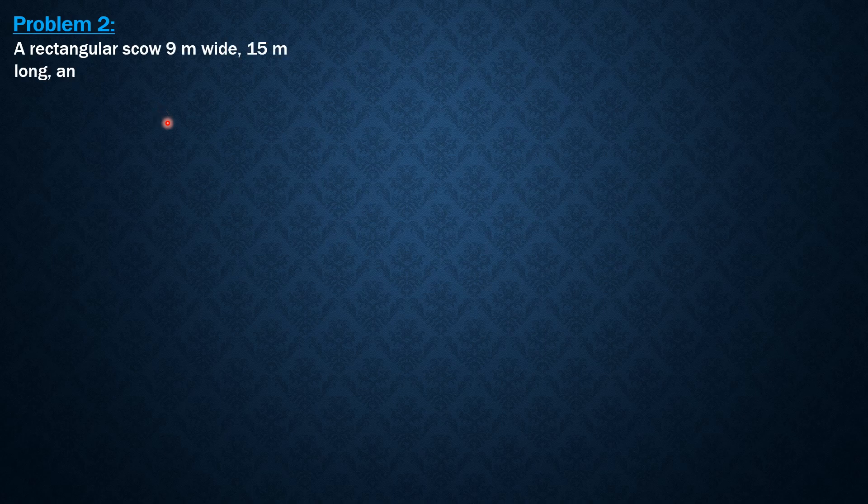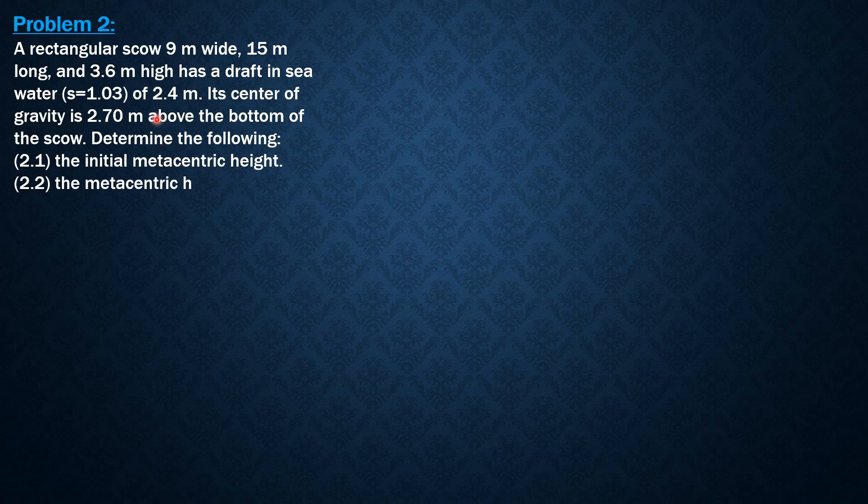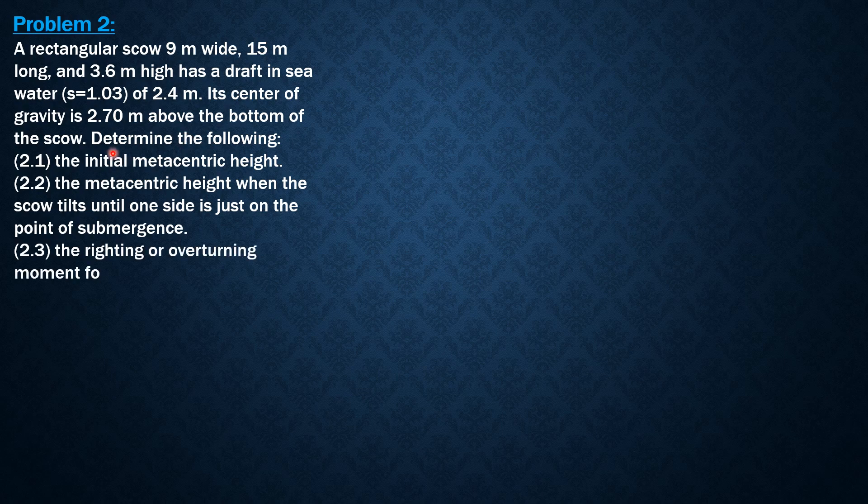Good day everyone, today I'm going to discuss example 2 on static stability of floating bodies. Here is the problem: a rectangular scow 9 meters wide, 15 meters long, and 3.6 meters high has a draft in seawater of specific gravity 1.03 of 2.4 meters. Its center of gravity is 2.7 meters above the bottom of the scow.